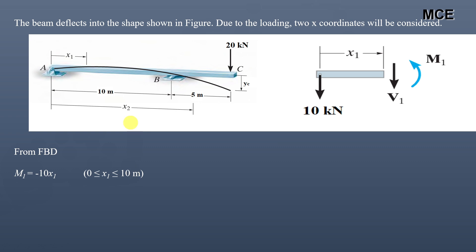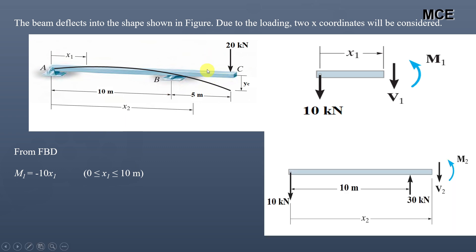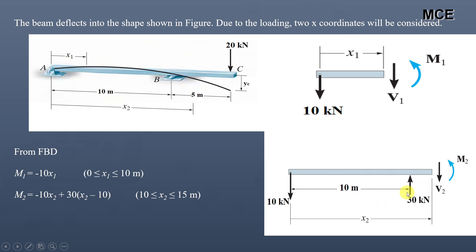Now cutting a section in portion BC and taking moments about that point — clockwise positive, anti-clockwise negative — M2 = −10x2 + 30(x2 − 10). Solving this gives M2 = 20x2 − 300, and this equation is valid for x2 from 10 to 15 meters.